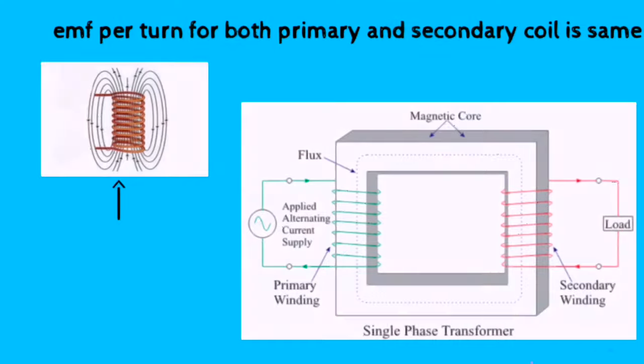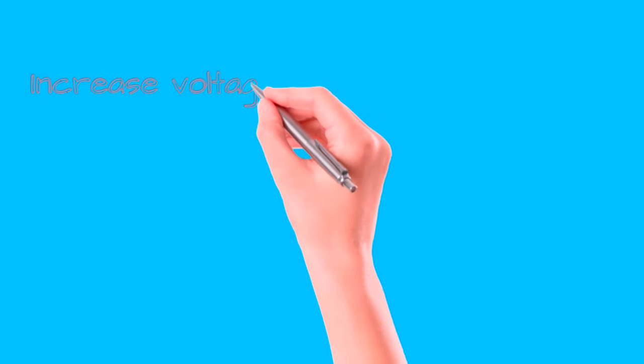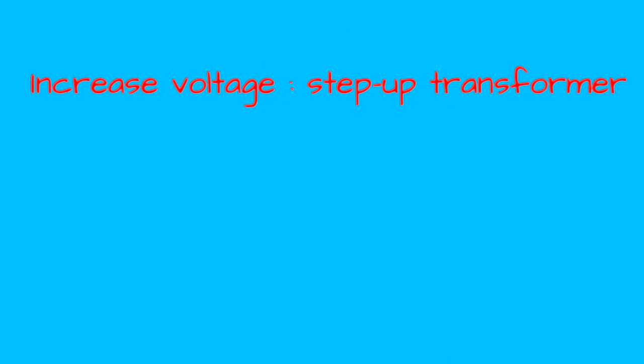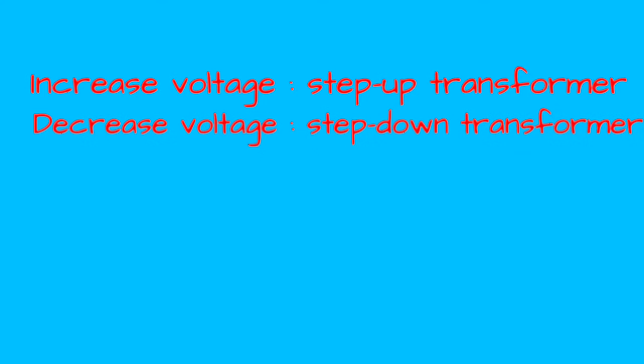A single phase transformer can either increase or decrease the voltage applied to primary winding. When a transformer is used to increase the voltage, it is called step-up transformer. And when it is used to decrease the voltage, it is called step-down transformer.